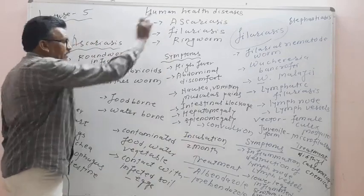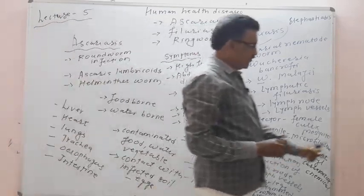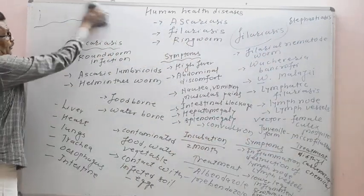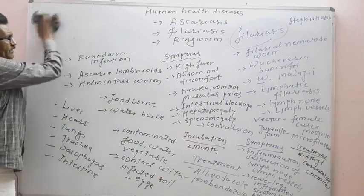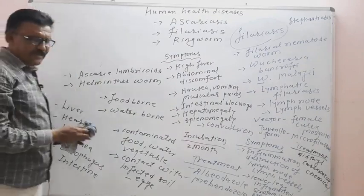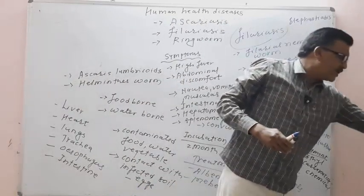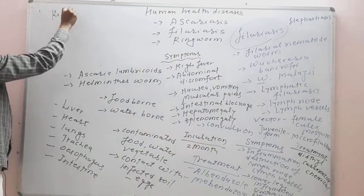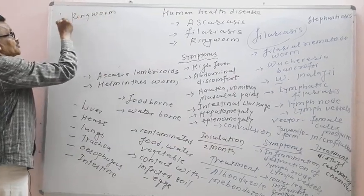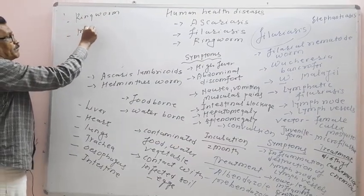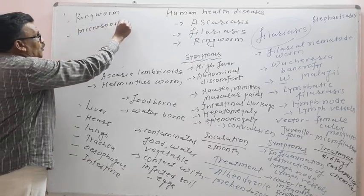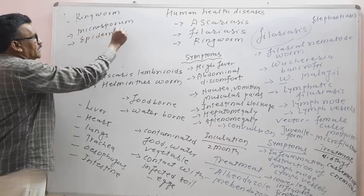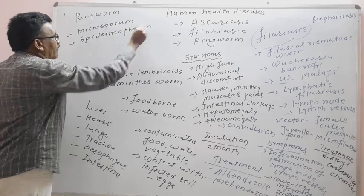The third disorder is ringworm, also called dermatophytosis. It is caused by fungi such as Microsporum, Epidermophyton, and Trichophyton.